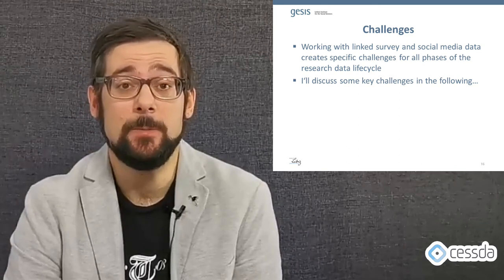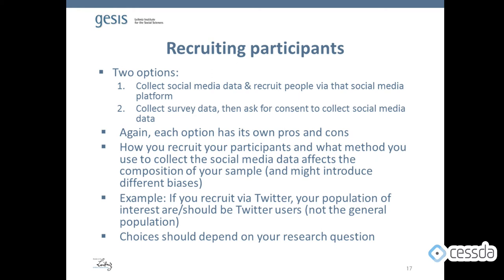Working with linked survey and social media data poses its own challenges for each phase of the research data lifecycle. The first challenge is recruiting participants. You have two options: you can start from the social media data and use social media to recruit people for your survey, or you can collect the survey data first and then ask for consent to also collect social media data. Each option has its own pros and cons. How you recruit participants and what method you use affects the composition of your sample and might introduce different biases. For example, if you recruit via Twitter, your population of interest should be Twitter users, not the general population. Ultimately, your choices should depend on your specific research question.